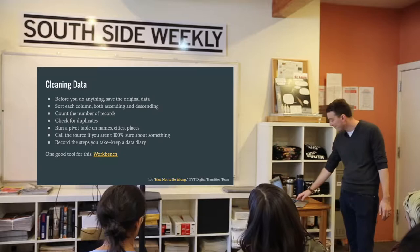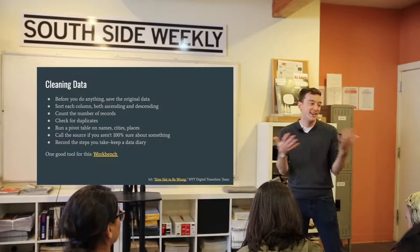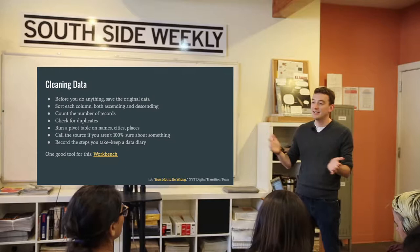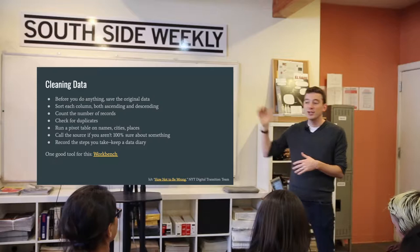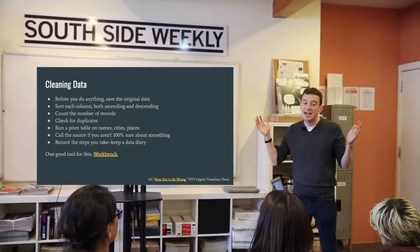Sort every column, both ascending and descending. This is assuming you've got data in a spreadsheet. If I get a data set — let's say it's housing prices by neighborhood in Chicago from Zillow — sort ascending and descending for each of the different columns and see what neighborhoods show up at the top, what are the numbers, what's the highest, what's the lowest. Does anything look like it's too high or too low or like a crazy outlier? That might be something you need to dig into and make sure it's accurate and correct.